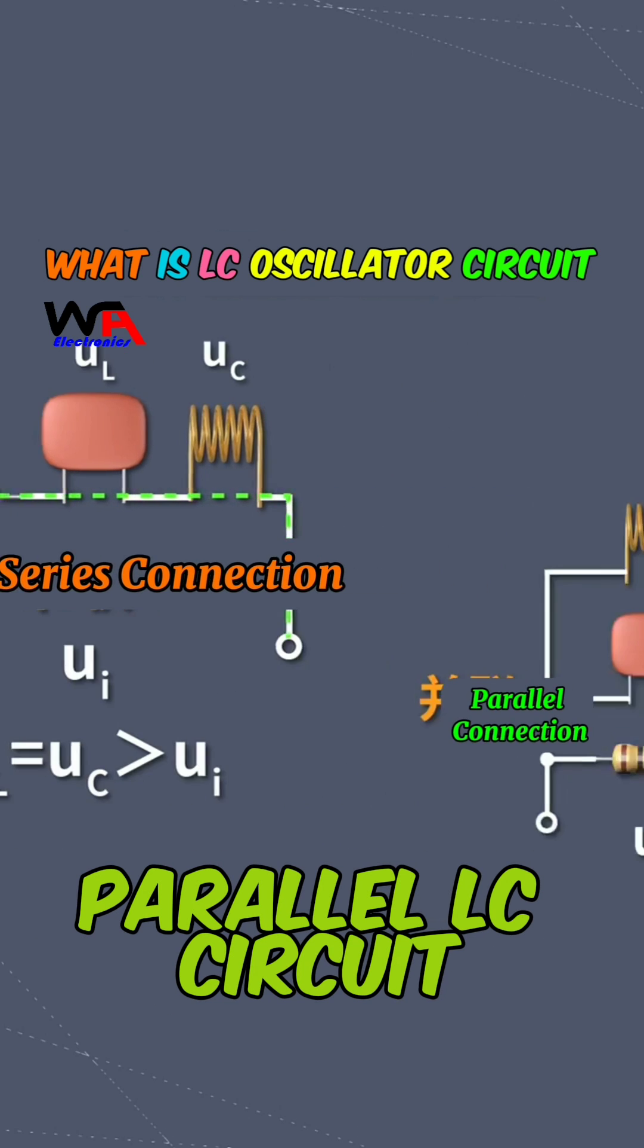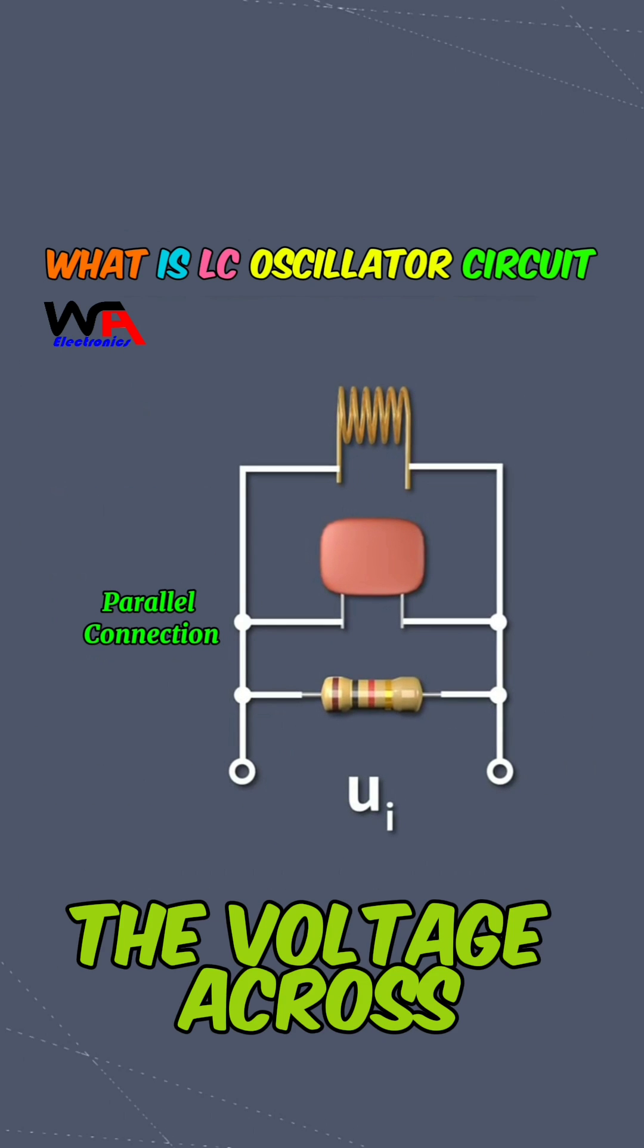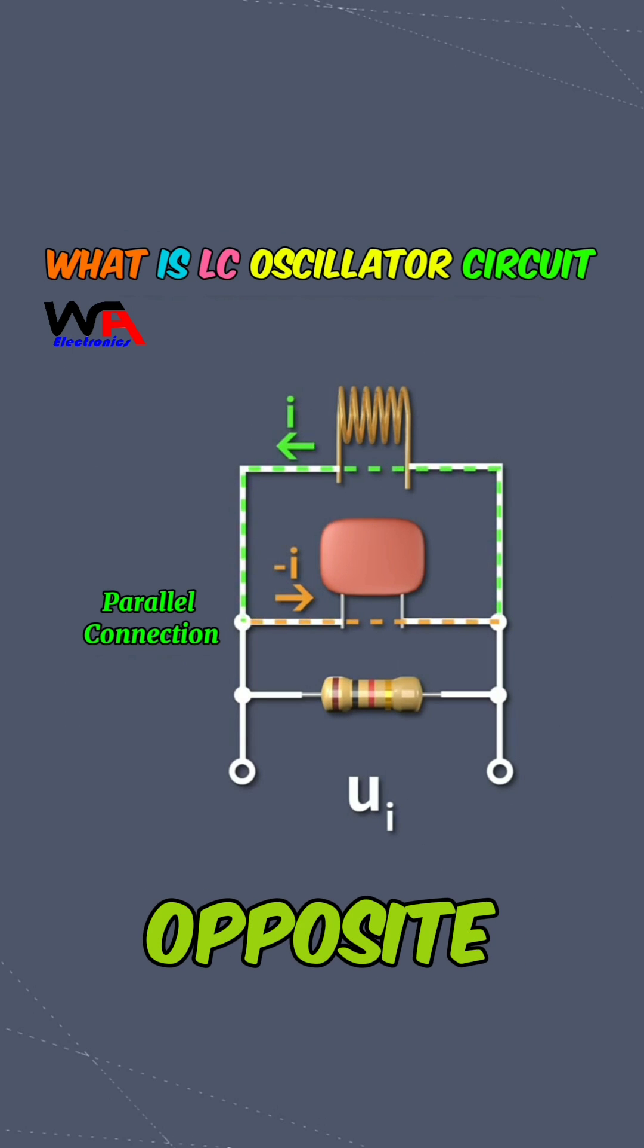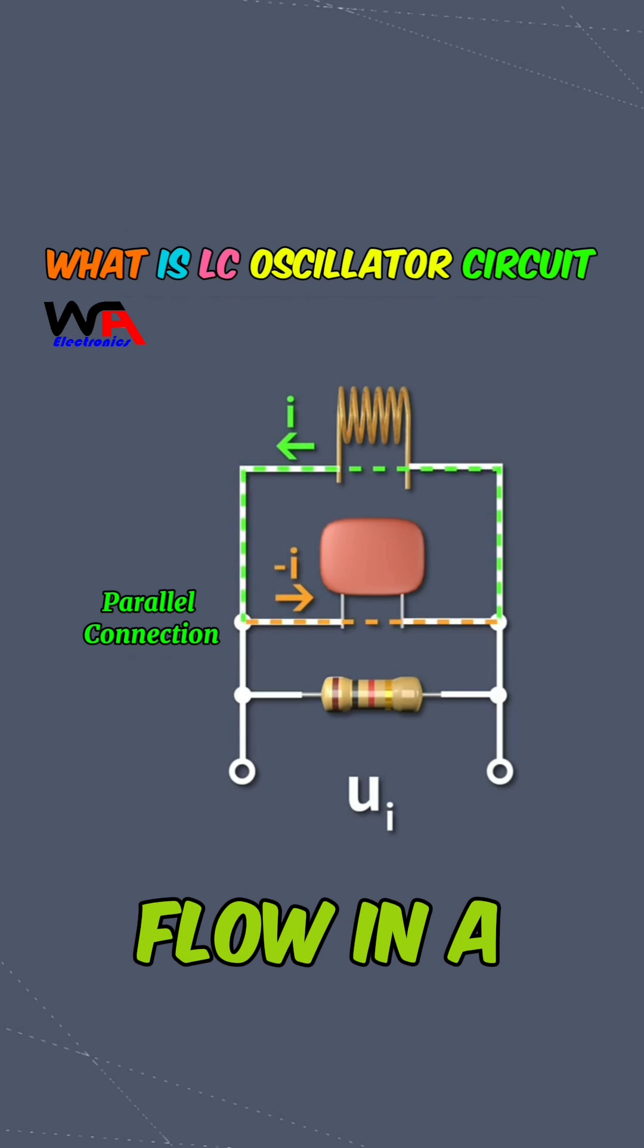Similarly, in a parallel LC circuit, the voltage across both components is equal, but the currents are equal and opposite, allowing them to flow in a complementary manner.